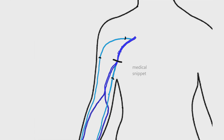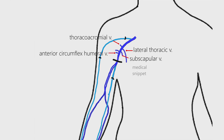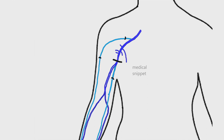The other tributaries of the axillary vein are the thoracoacromial vein, lateral thoracic vein, subscapular vein, anterior circumflex humeral vein, and posterior circumflex humeral vein. The axillary vein continues as the subclavian vein from the outer border of the first rib.